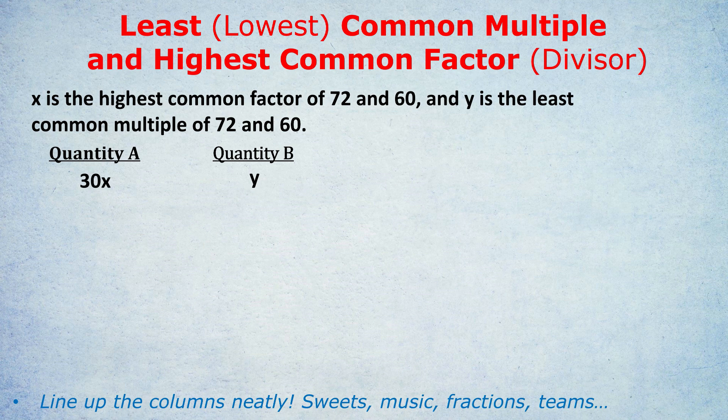But that's enough of an introduction. How do we actually do it? Let's tackle this question. X is the highest common factor of 72 and 60, while Y is the least common multiple of 72 and 60. What's bigger, 30X or Y? Are they the same or we don't know?